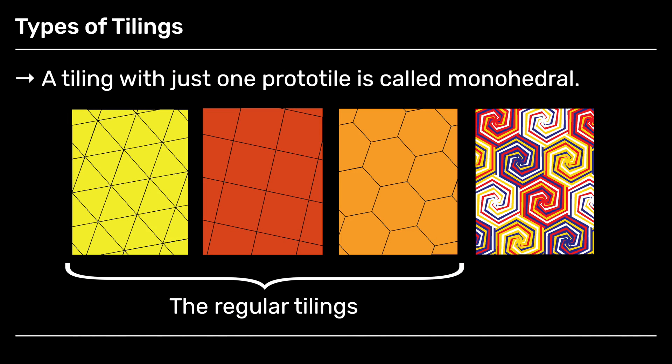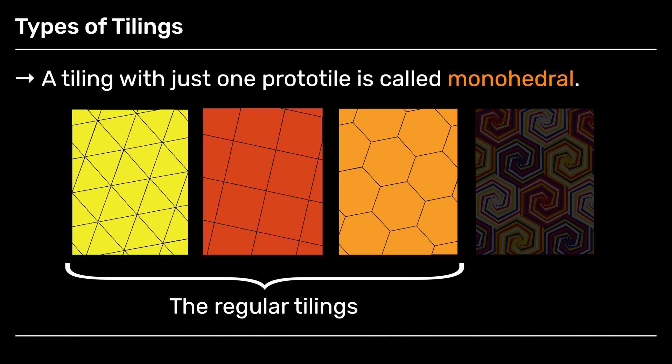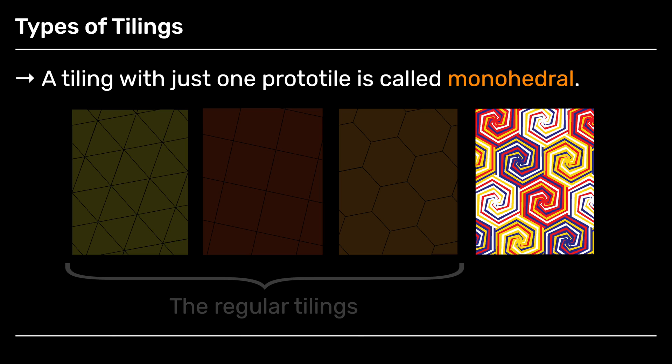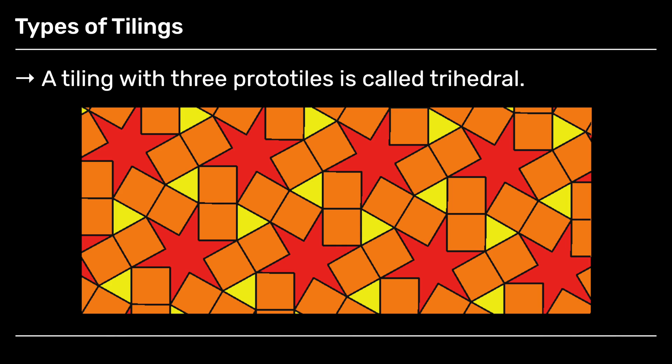If I have a tiling with just one proto tile, that's called a monohedral tiling. The regular tilings that we saw before, each of which had either an equilateral triangle or a square or a hexagon, those are all regular tilings. The same with that hexagonal spider, that's another example of a monohedral tiling. On the other hand, the tiling that we saw with the triangle, square, and the star is not a monohedral tiling. That one I would call a trihedral tiling because it has three proto tiles.